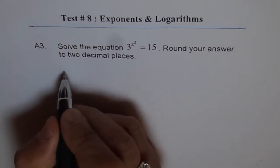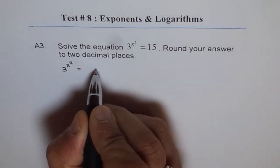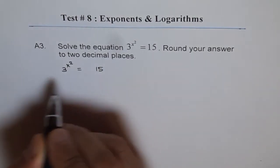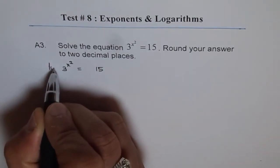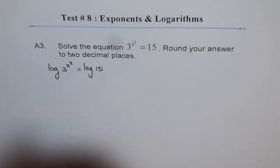So the equation here is 3 to the power of x squared equals to 15. We can take log of both sides. So it becomes log of 3 to the power of x squared equals to log of 15.